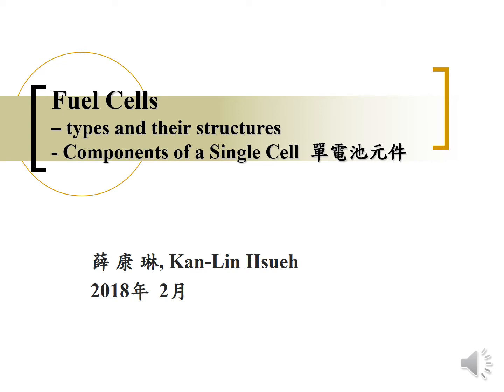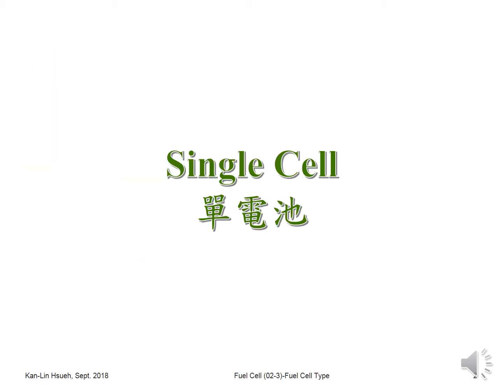Hello, this is Kenny speaking. In this section we're going to talk about the components of the single cell. In the previous section we mentioned the core component of a single cell is the MEA, the membrane electrode assembly. But how do we evenly distribute the reactant from outside the cell into the cell, and conduct the current in and out from the catalyst layer to the external cell outside? This raises a question: do we need other components to make this happen?